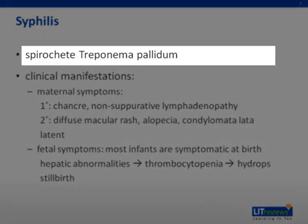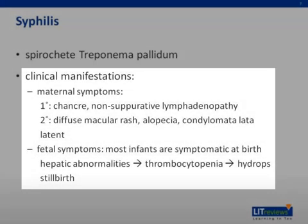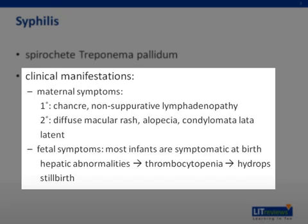Syphilis is caused by the spirochete Treponema pallidum. Unlike other TORCH infections, most infected infants are symptomatic at the time of birth. The symptoms manifest as hepatic abnormalities leading to anemia and thrombocytopenia, then ascites and hydrops, and possibly intrauterine fetal demise. In pregnant women, there are different phases of presentation.